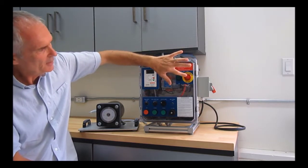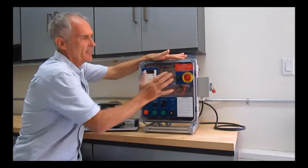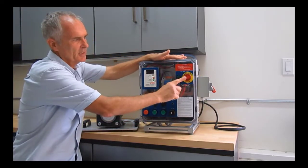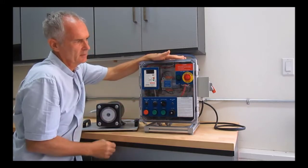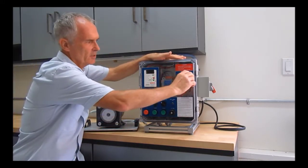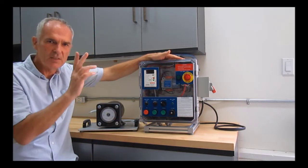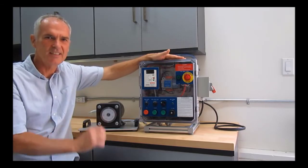This e-stop button has to be a maintained operation, and once it's activated it has to hold in that position. To release this one you have to twist it. So if you operate the emergency stop, to release it you have to twist - it's a twist-release emergency stop button. Hope you enjoyed the video. Thanks for watching, talk to you again.